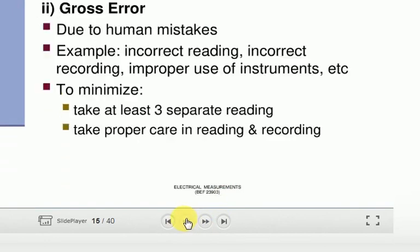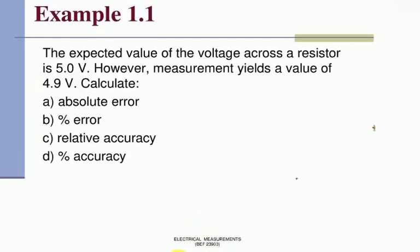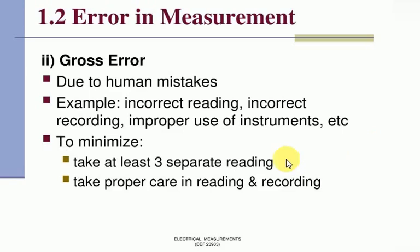Error - we have studied it. Gross error due to human mistakes. This example is incorrect reading, incorrect recording, improper use of instruments. Minimize by taking at least three separate readings and take proper care in reading and recording. This is gross error.